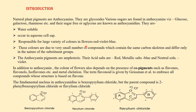At pH 4 we get red color. At pH 6 to 7, violet. And at higher pH, blue color is seen. These colors are due to a very small number of compounds which contain the same carbon skeleton and differ only in the nature of the substituent groups. The anthocyanin pigments are amphoteric. Their acid salts are red, metallic salts are blue, and neutral solution is violet.